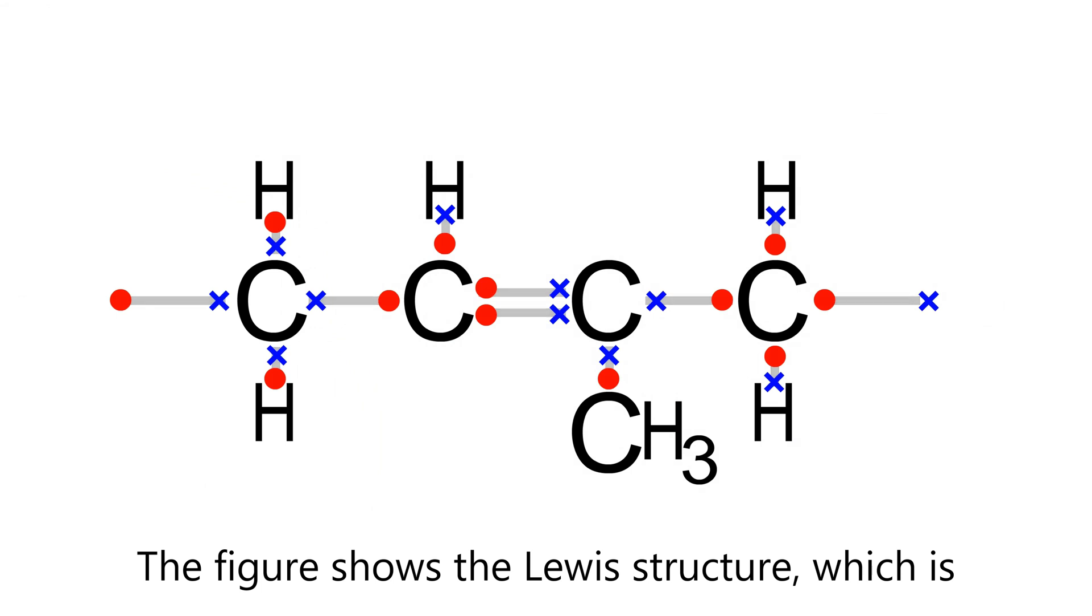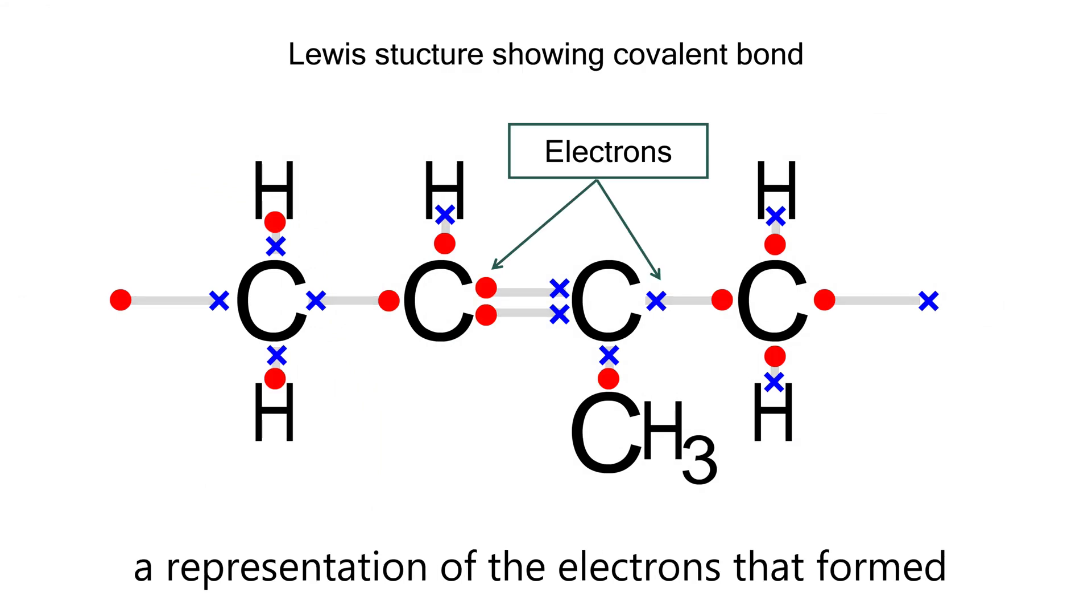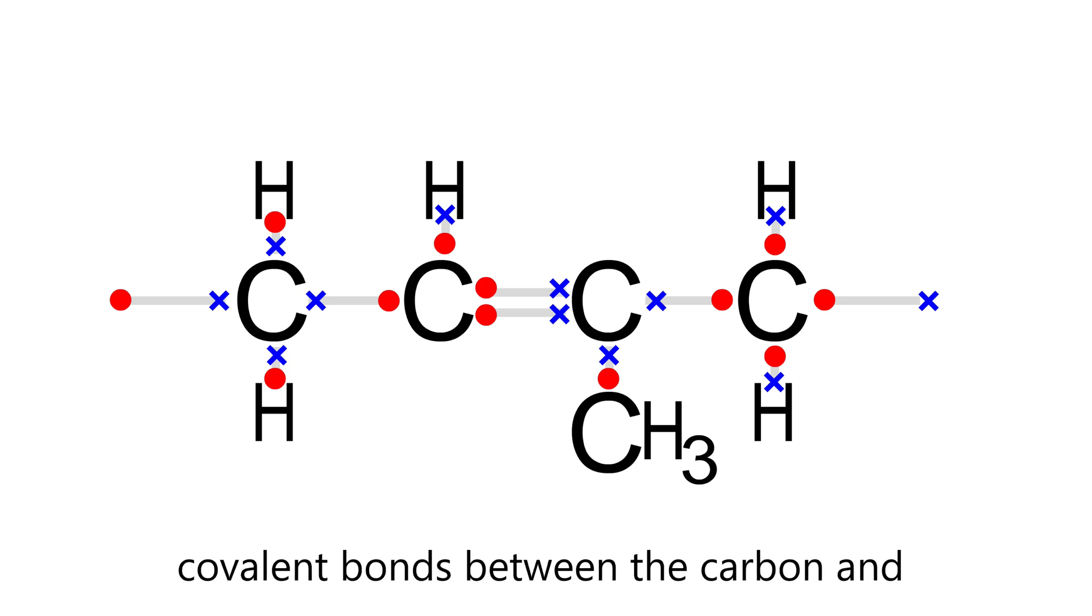The figure shows a Lewis structure, which is a representation of the electrons that form covalent bonds between the carbon and hydrogen atoms.